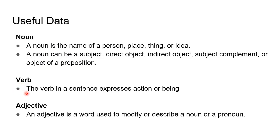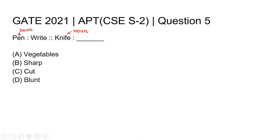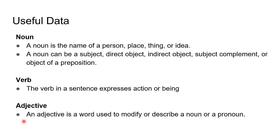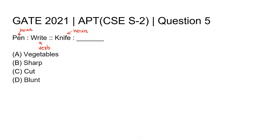A verb in a sentence expresses action or being. In our question, write expresses the action of writing, so write is a verb. An adjective is a word used to modify or describe a noun or a pronoun.